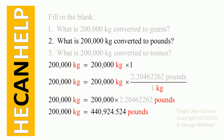So that's what I did here: 200,000 times 1, and then I replace 1 by 2.20462262 pounds over 1 kg, then I cancel kg, and then I get my answer in pounds — 440,924.524 pounds.